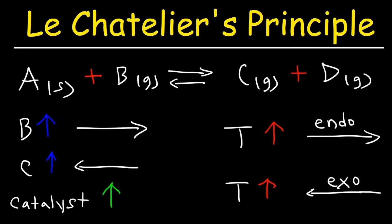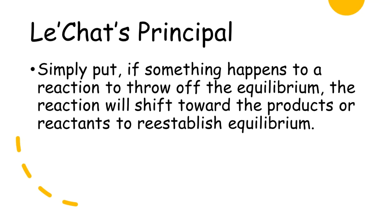Enter Le Chatelier's principle. It tells us what a reaction will do to re-establish equilibrium if it has lost it. Simply put, Le Chatelier's principle tells us that if something happens to a reaction to throw off the equilibrium, the reaction will shift towards the products or reactants to re-establish equilibrium.